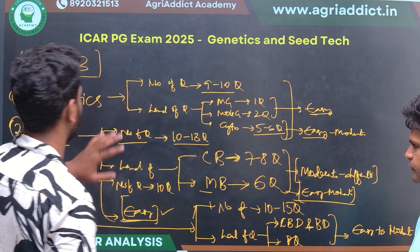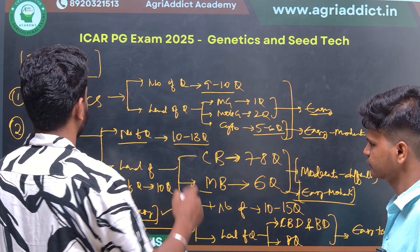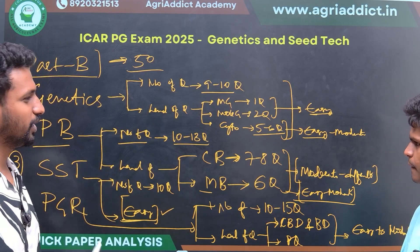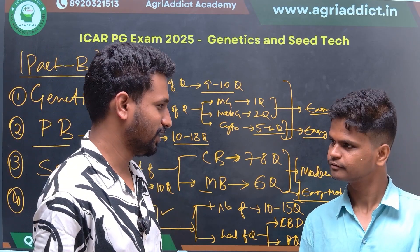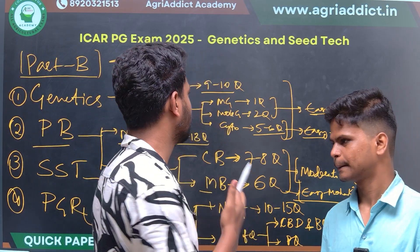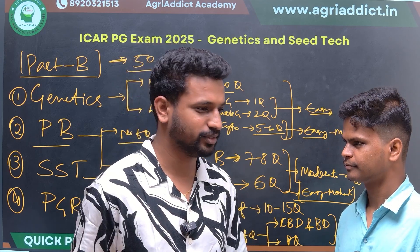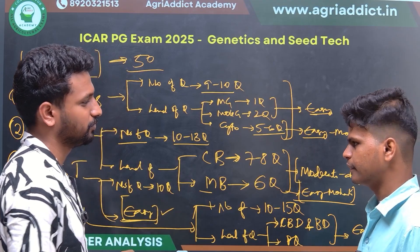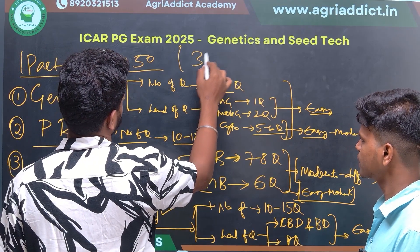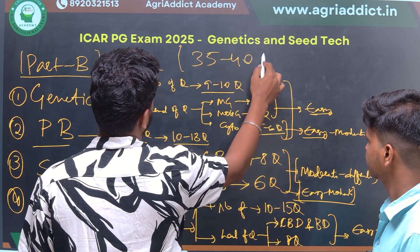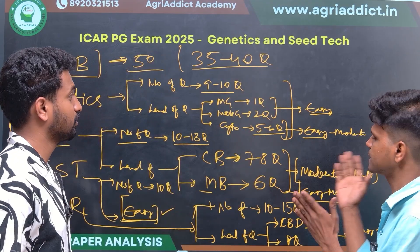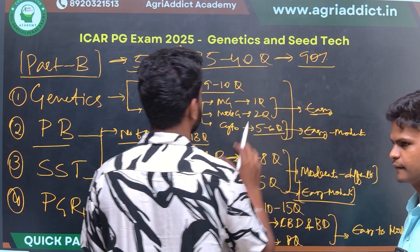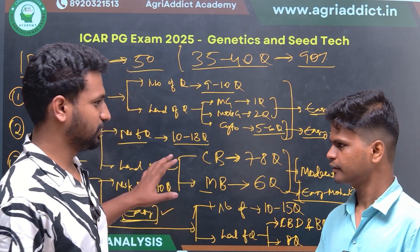Overall, Part B covers a total of 50 questions divided across different subjects. Based on interactions with IARI students who are likely top scorers, on average students attempted around 35 to 40 questions, with approximately 90% accuracy.